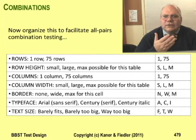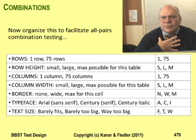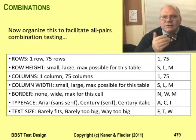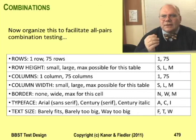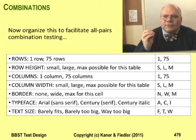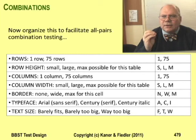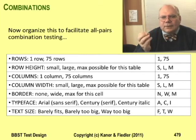I mentioned earlier that I prefer to use single digits as abbreviations for variables' values. The variables are all independent, so the labels don't matter — nothing affects anything anyway. Some other people prefer abbreviations that are more closely tied to the meaning of the thing abbreviated, so in this example I'll show those.